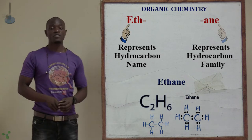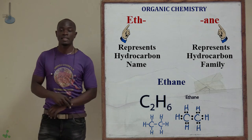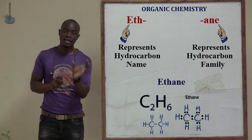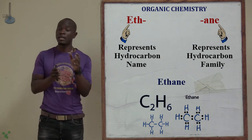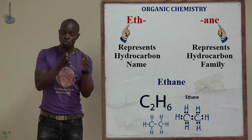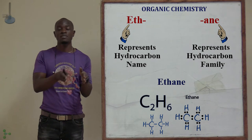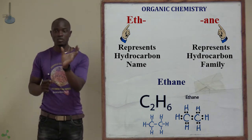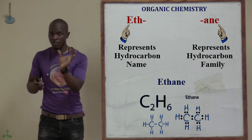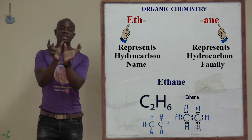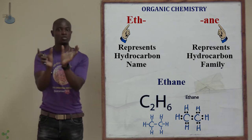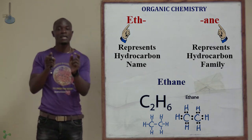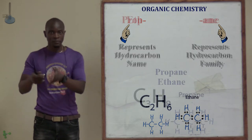The next one is ethane. Remember, the prefix for two carbon atoms is 'eth'. But since we are in the alkane family, we end with A-N-E to represent the full name, which is ethane.